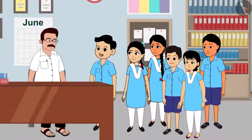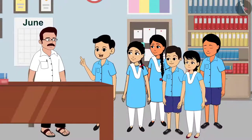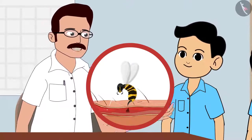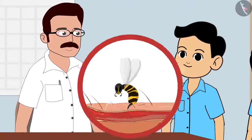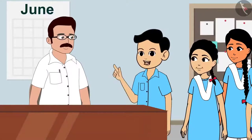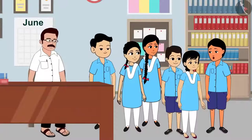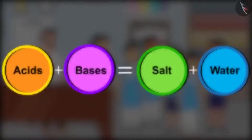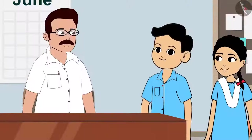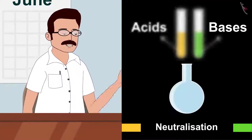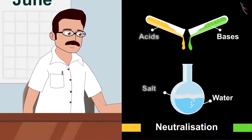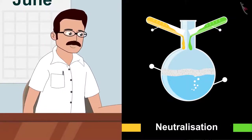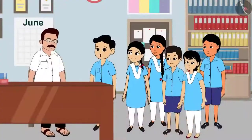Sir, how can baking soda be a medicine for an insect bite? When a bee stings, it releases an acid on our body — we feel pain due to this. But baking soda is a base! When acids and bases mix, salt and water are produced. Both acids and bases nullify each other's effect — salt and water are formed. This is called neutralization. In this case, baking soda nullified the effect of the acid produced by the sting.